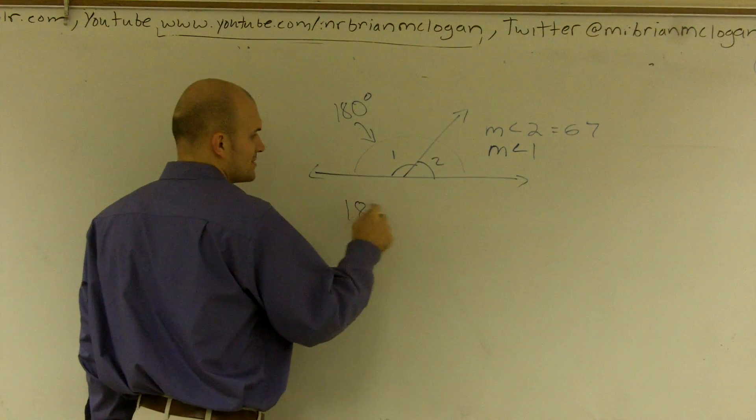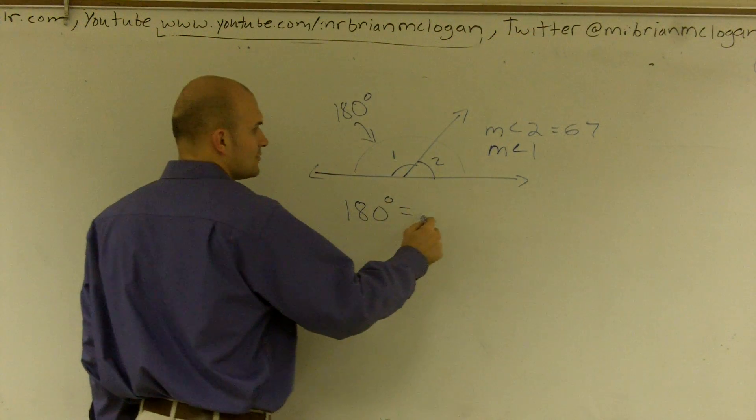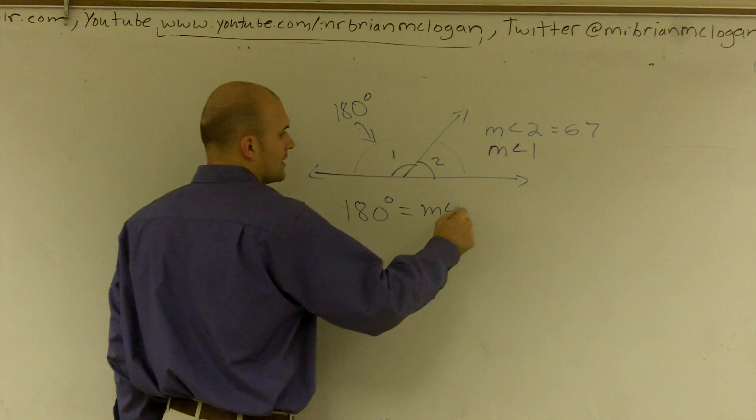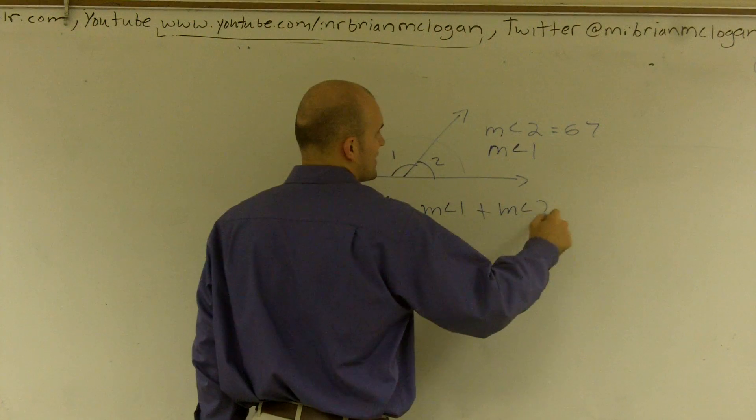So what I'm going to do is actually set up an equation. I'm going to say 180 degrees equals measure of angle 1 plus measure of angle 2.